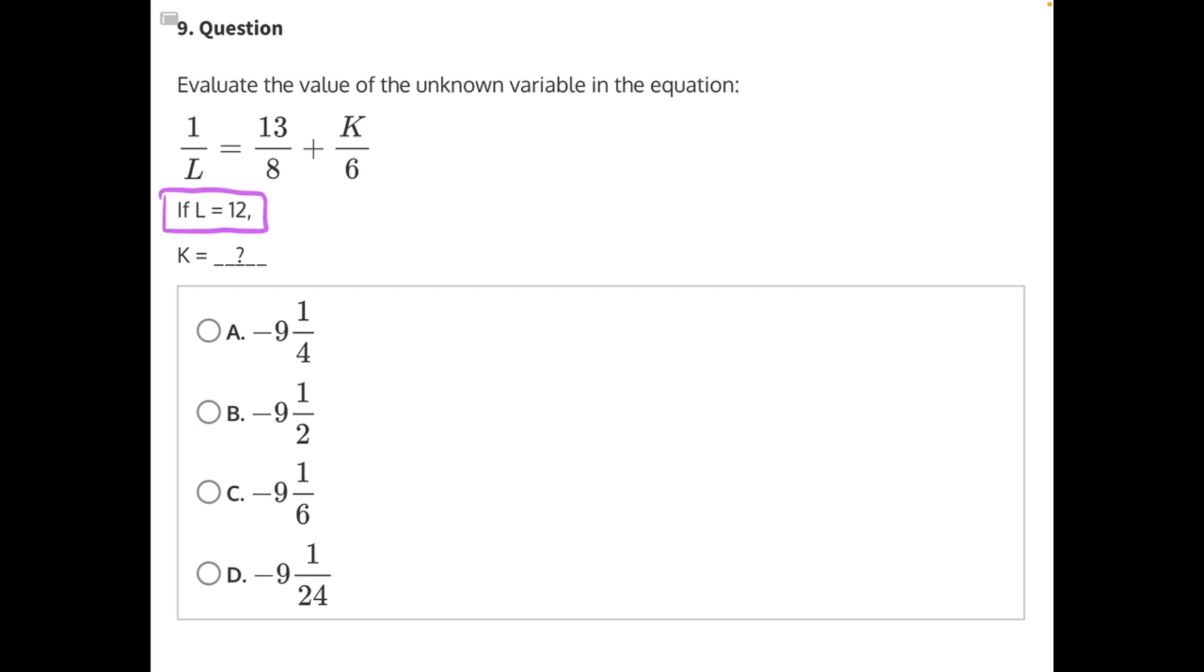If we rewrote the equation, we'd have 1 over, instead of L, we would put 12, since 12 and L are equivalent. We'd have 13 over 8 plus K over 6.